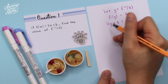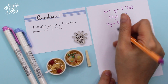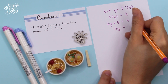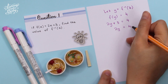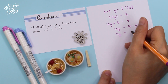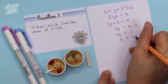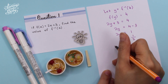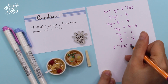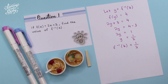Next, we have to make y the subject because y is the inverse of f(x). So it will be 2y equals 4 minus 3, so 2y equals 1. So y equals 1 over 2. Therefore, f⁻¹(4) is equal to 1 over 2. That's the final answer.